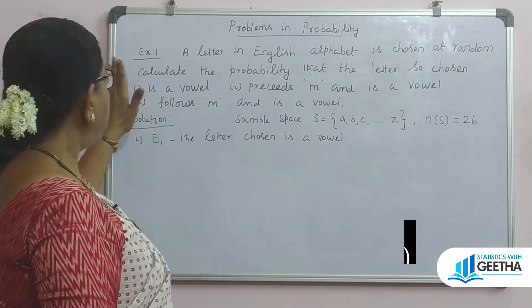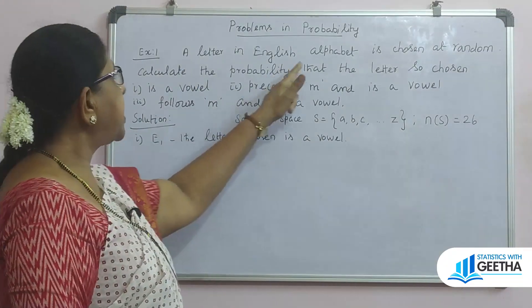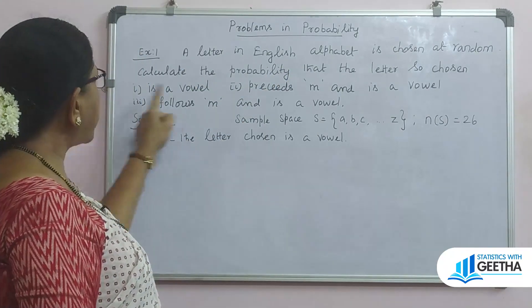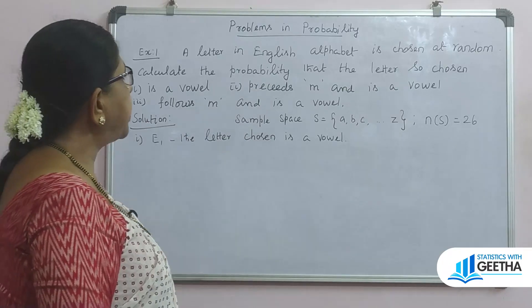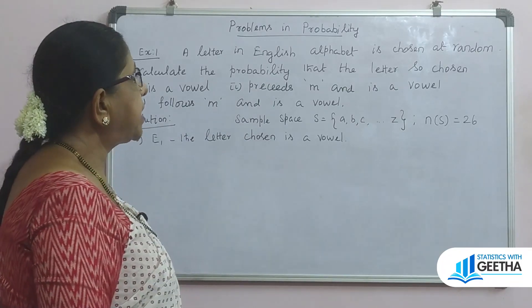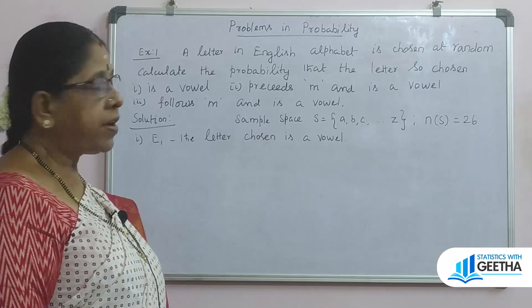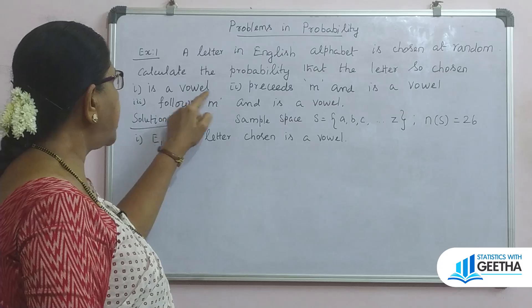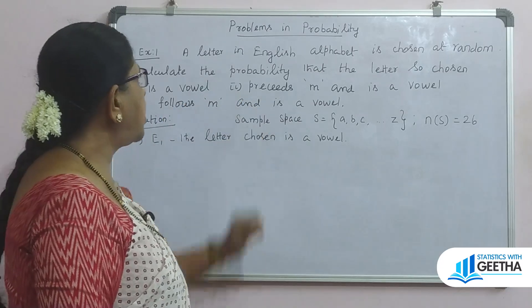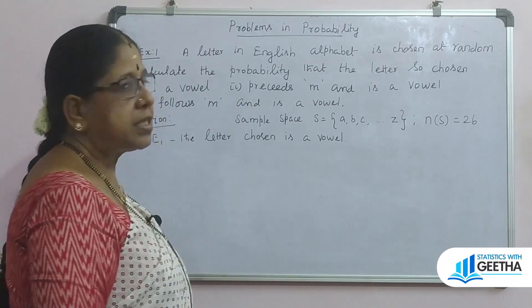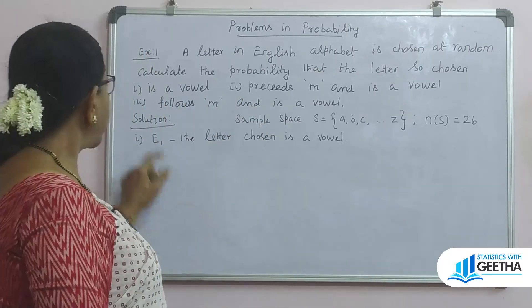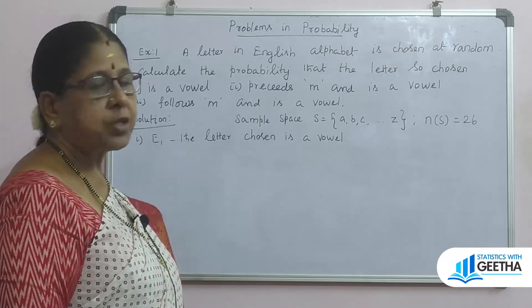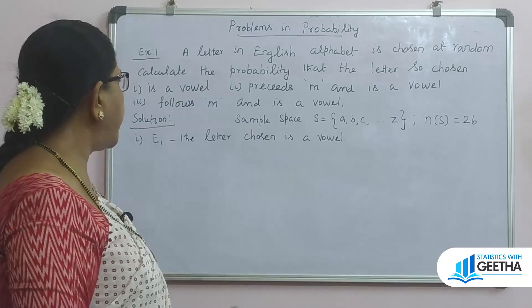First problem: A letter in the English alphabet is chosen at random. Calculate the probability that the letter so chosen is: first, a vowel; second, precedes M and is a vowel; third, follows M and is a vowel.